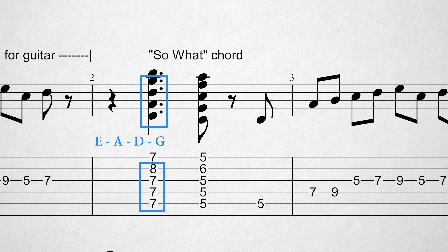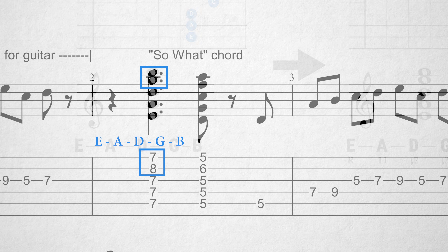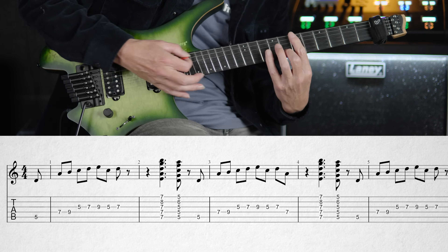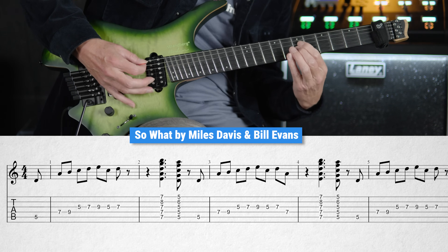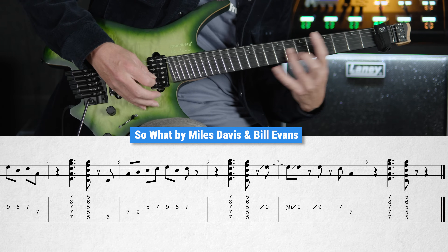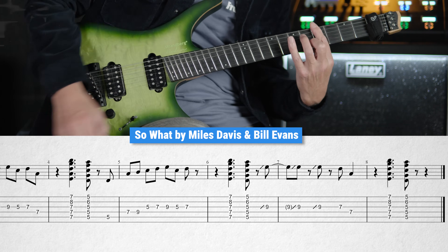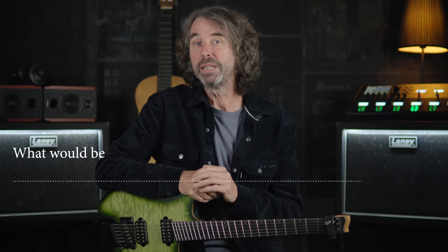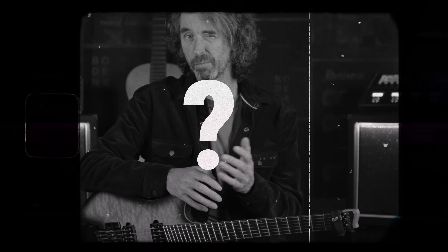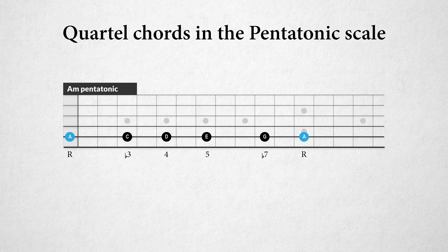The So What chord is a stack of three perfect fourths and a major third, which creates a kind of undefined and floating sound. You could see this as a minor 7-11 chord. Now, what would be the first thing that you would play over an A minor 7 chord? Of course, the A minor pentatonic scale. Boring? Maybe sometimes, but it can also be a very interesting scale — it already has an ambiguous sound because of the large intervals found in the scale.